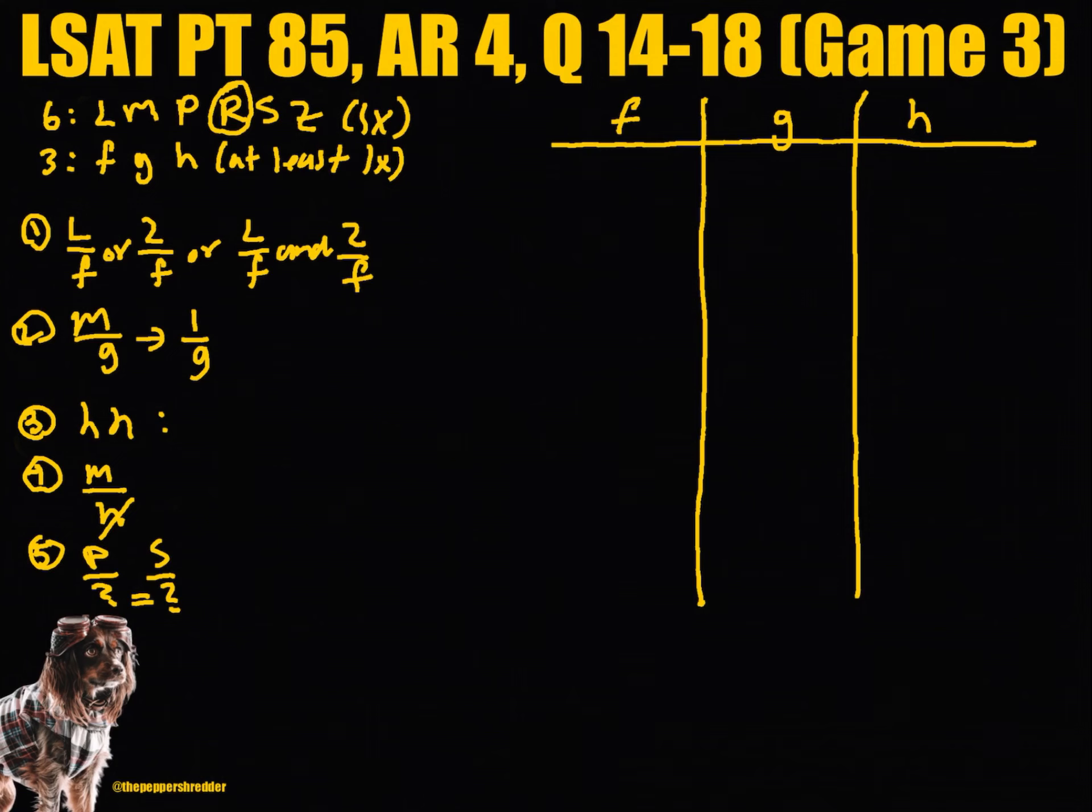In one instance we can have three actors in F, one actor in G, and two actors in H. In another instance we can have one actor in F, three actors in G, and two actors in H. In another instance we can have two actors in each of the three groups.